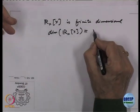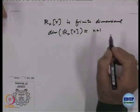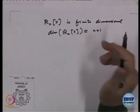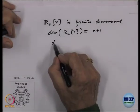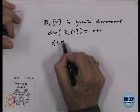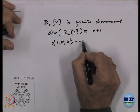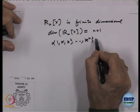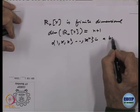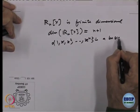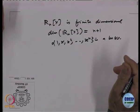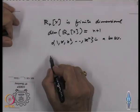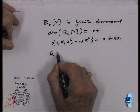So polynomials of degree less than or equal to 3 form a finitely generated vector space of dimension 4. And R_n(x) is of dimension n plus 1. So what is a basis? 1, x, x squared, x cubed, up to x to the n — that is a basis.